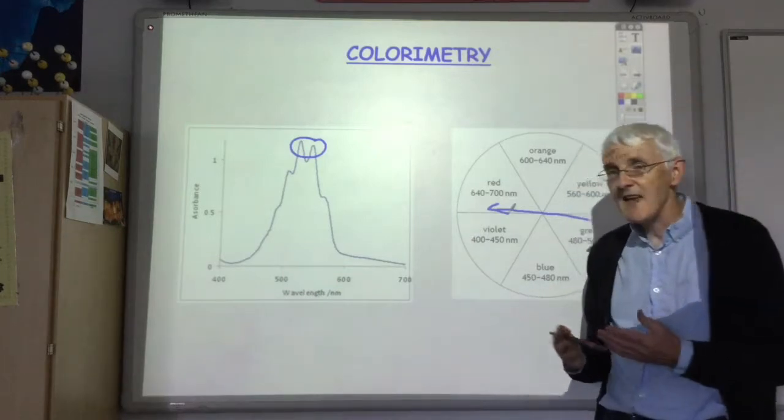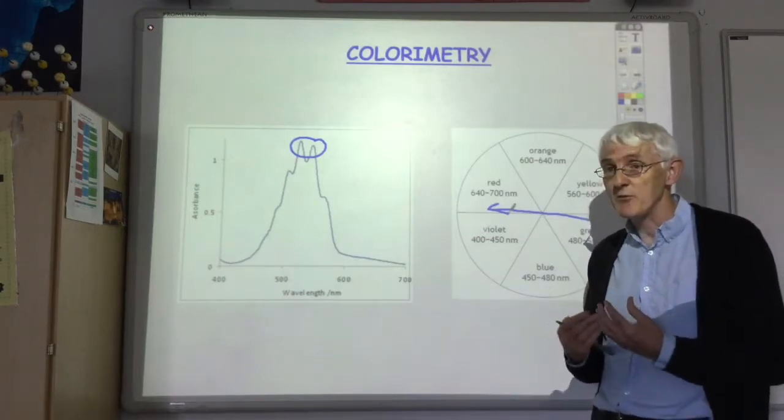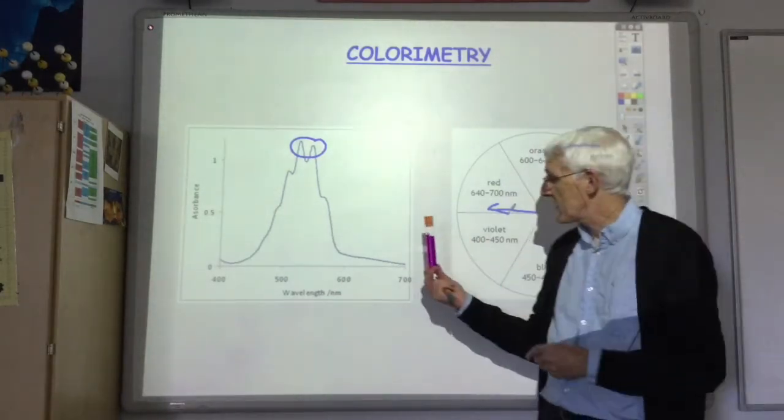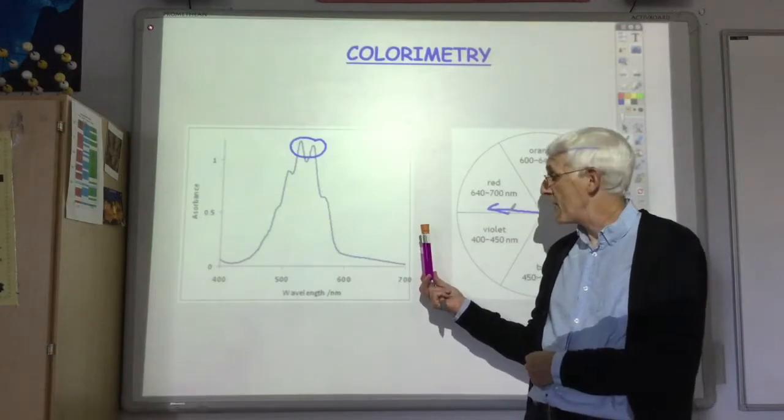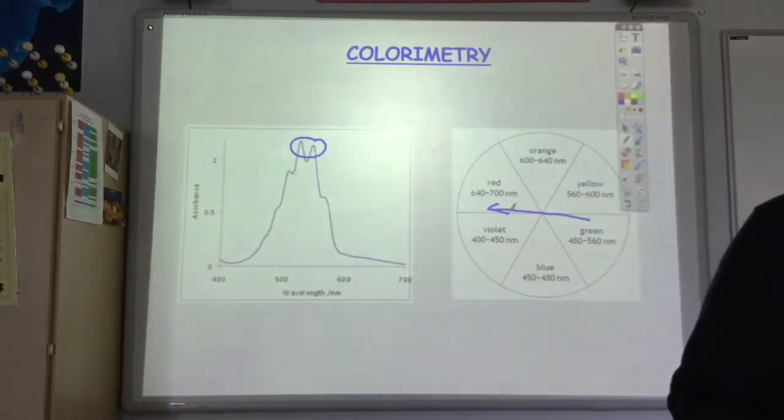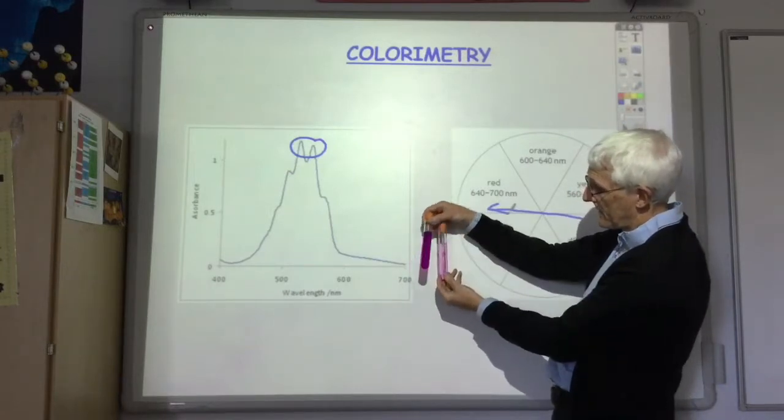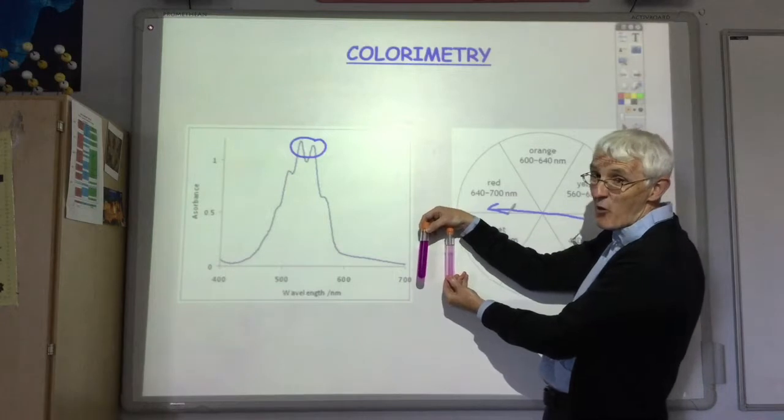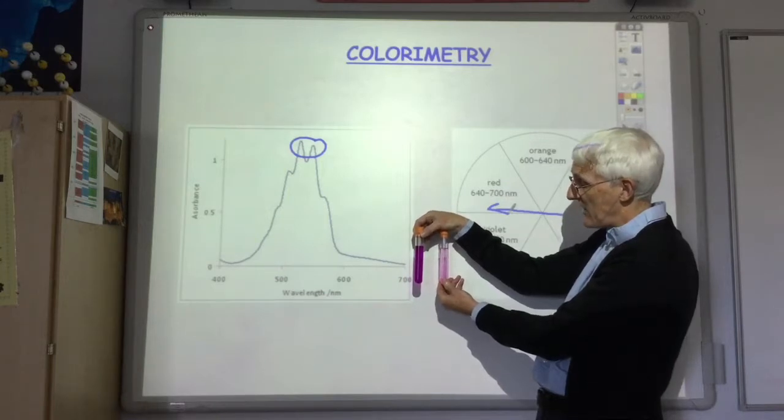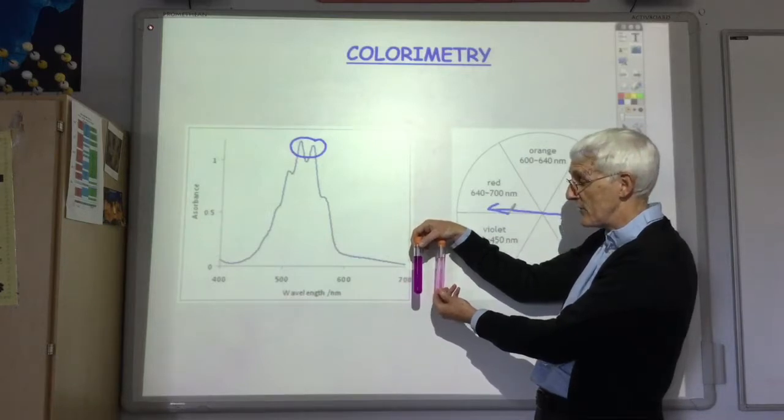So the basic theory is that the higher the concentration of permanganate in the sample, then the more intense the purple color would be. This sample here contains one mole per liter of permanganate and it's quite an intense purple color. The second sample, however, contains a far lower concentration of permanganate. In fact, it's 10 times lower, 0.1 mole per liter. And you see the purple color is less intense because there's less permanganate complex in there to absorb the light.